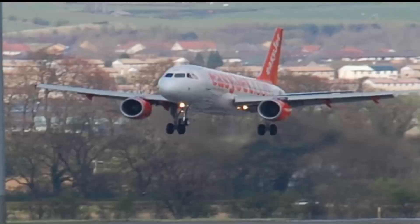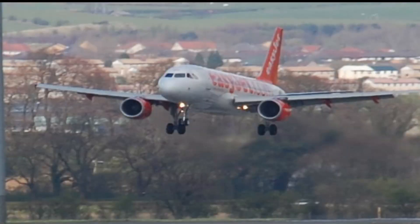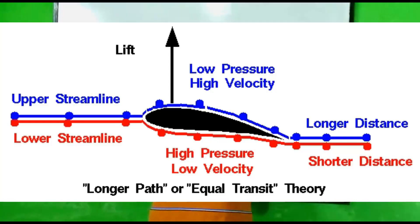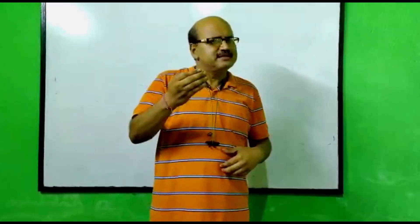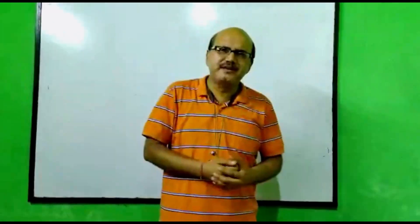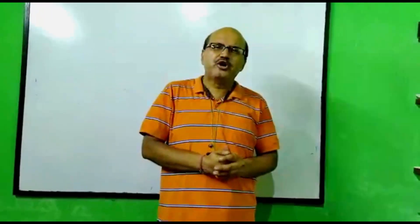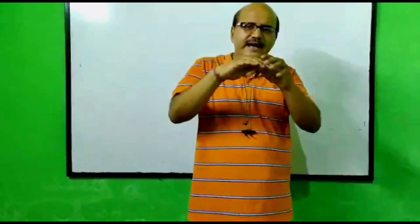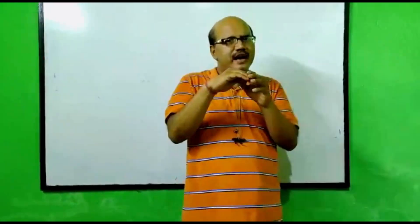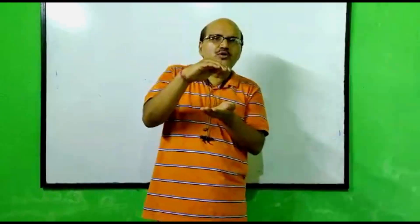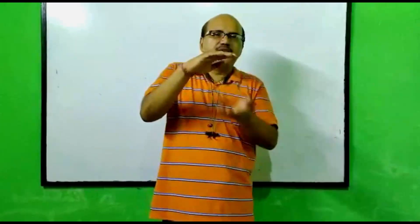Aeroplanes are so designed that the upper part is streamlined. The same principle applies. Because the upper surface is streamlined, the velocity of air above the wing will be way higher. So pressure above will be less, and pressure below will be higher. So the aeroplane gets a lift upward.